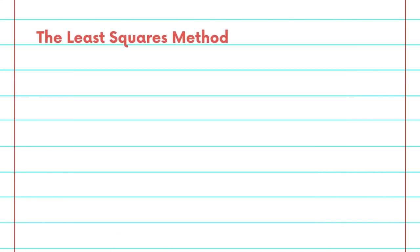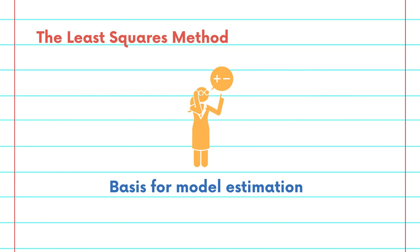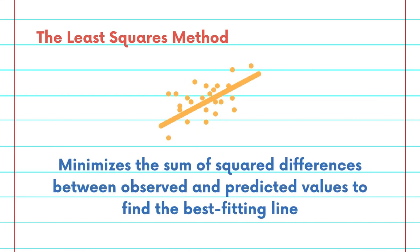So let's start with the least squares method. The least squares method serves as the basis of model estimation. It tries to minimize the sum of square differences between the observed value and predicted value to find the best fitting line.